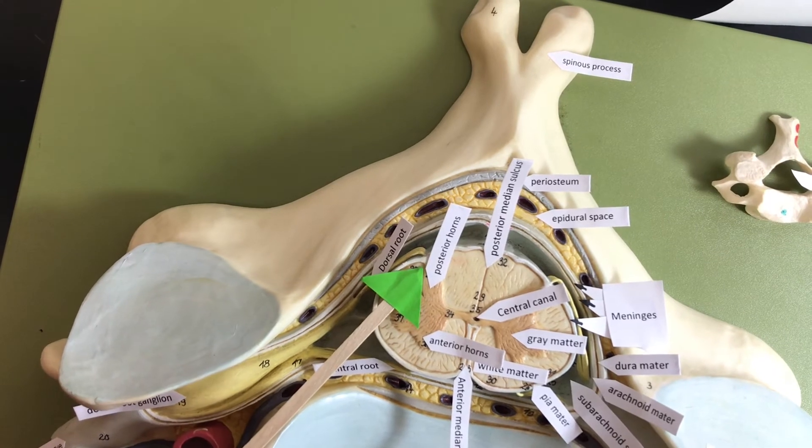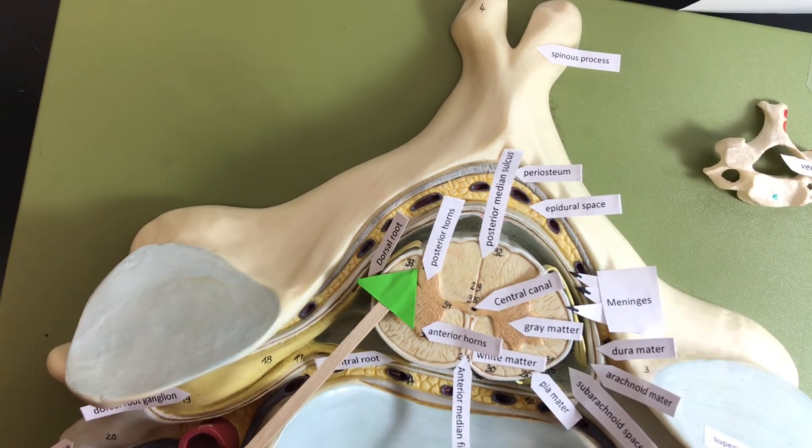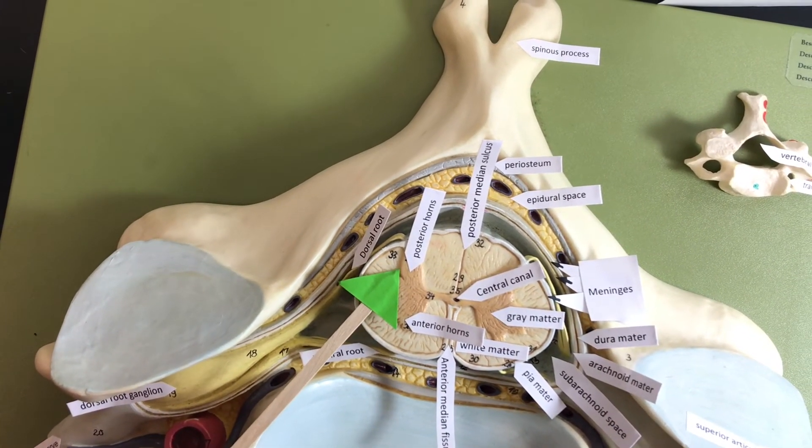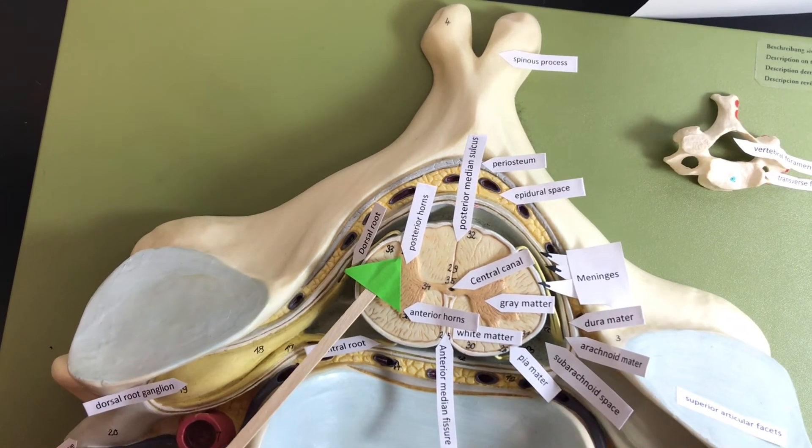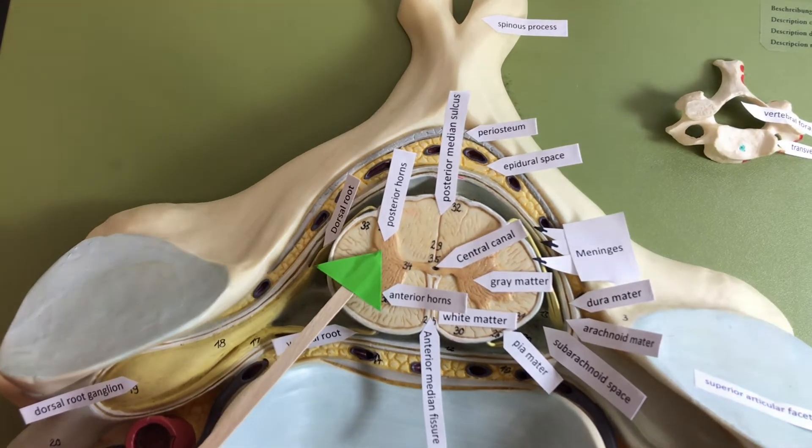And enter at the posterior horn of the gray matter of the spinal cord. The posterior horn is going to house the sensory neurons and the cell bodies of the interneurons.